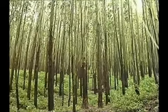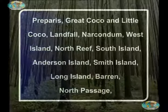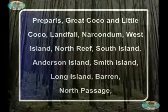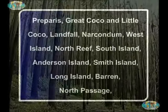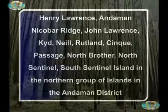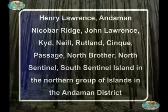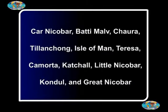Being strategically located, the islands' enhanced geopolitical significance is crucial to the entire Asia Pacific and South Asian region. The different islands in the Andaman and Nicobar Archipelago include Preparis, Great Coco, Little Coco, Landfall, Narcondam, West Island, North Reef, South Island, Long Island, Barren Island, North Passage, Henry Lawrence, John Lawrence, Heed, Neil Island, Rutland, Swaraj Dweep, Passage, North Brother, North Sentinel, and South Sentinel Island in the Andaman district. In the Nicobar district, we find Car Nicobar, Batti Malv, Chowra, Tillanchong, Isle of Man, Teresa, Camorta, Katchal, Little Nicobar, Kondun, and Great Nicobar.